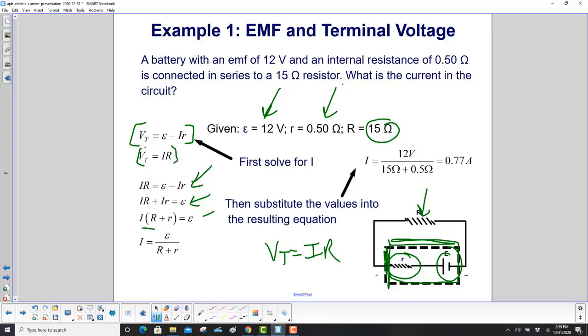Factor out the I and we find that the current equals the EMF divided by R plus r. Or, if we just started with the EMF, we could find the current equals ε over the equivalent resistance of the circuit, which is r plus R. Either way works. Then we substitute in our values: the EMF is 12 volts, the two resistors are 15 plus 0.5, and we get 0.77 amps.